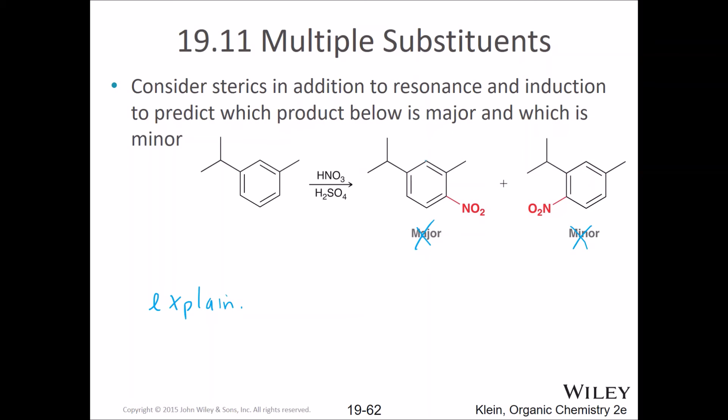Okay. So first of all, here's ortho for both of them. Here's ortho for one and para for the other. And here's ortho for one and para for the other. So they're not fighting anymore. They both get what they want. But it turns out this nitro group is trying to not get close to that one. And that's why it's minor. So the issue would be steric hindrance.